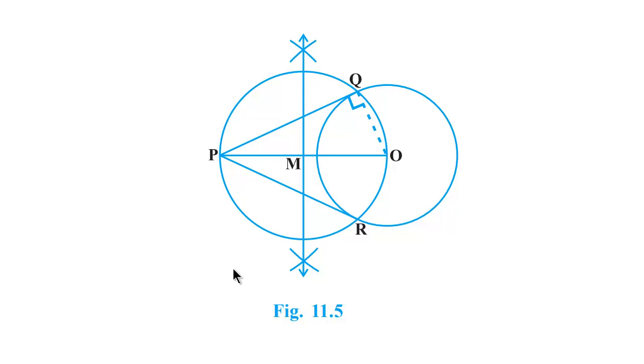The very first thing that we need to understand is what is tangent. Tangent is any line which touches the circle at a single point. And we have a very important property that we need to understand before going to the problem.